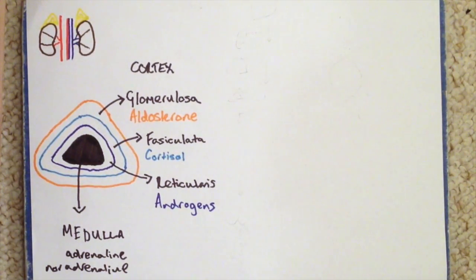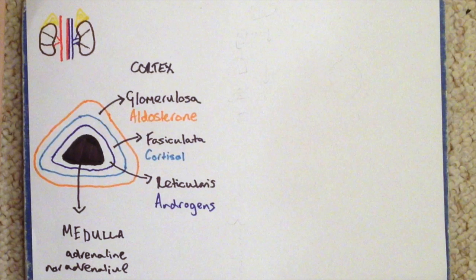Another useful way of remembering what's what in the adrenal glands is to remember the term GFR. GFR is a way of monitoring kidney function, and we can remember that the adrenal glands sit on top of the kidneys. So that's an easy way for us to remember the order of glomerulosa, fasciculata, reticularis.